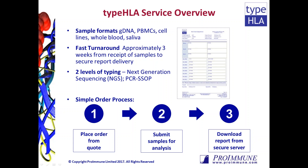We offer two levels of typing: NGS for precise full-digit resolution and PCR-SSOP. Ordering is easy — you just need to request a quotation from Proimmune, place the order, and once processed you will be sent shipping instructions. Submit the samples using the shipping labels provided, and the report will be available for download from the Proimmune secure server once the analysis is complete.